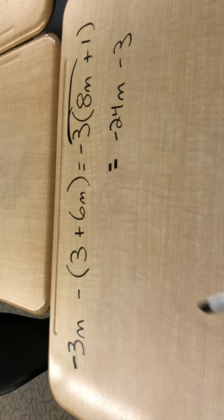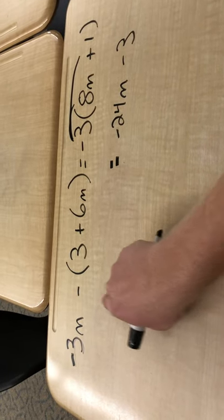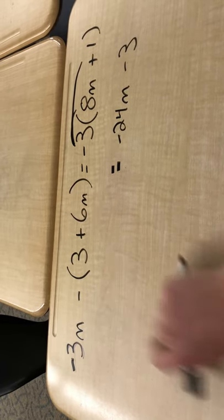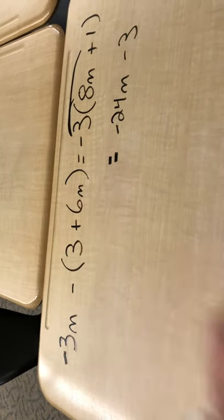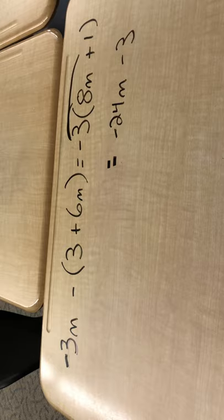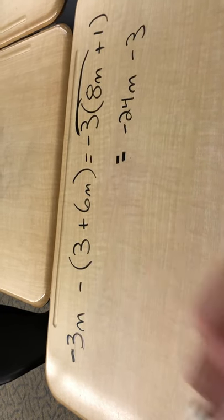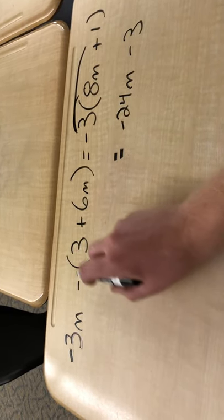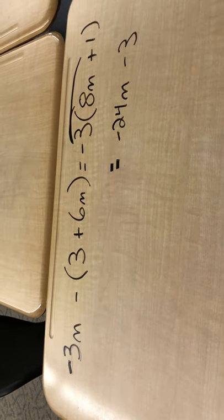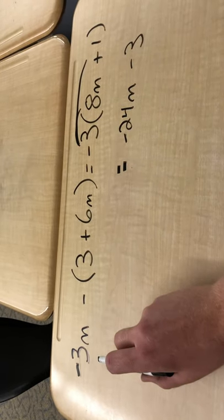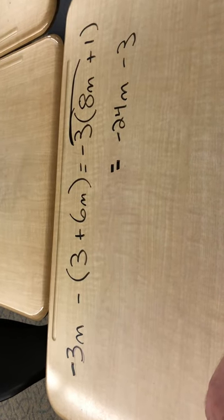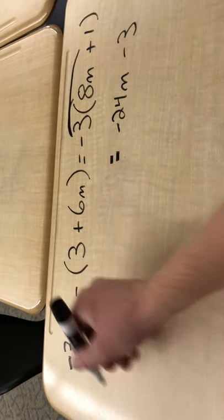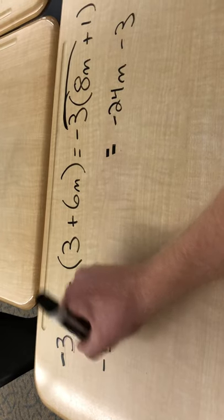Okay, this is what throws a lot of people. That minus sign right there, that is technically a negative 1. So we're going to distribute that negative sign right there. We're going to distribute that negative 1 to everything in that first parentheses. That negative 3m, that's a term right there that's all by itself. There's really nothing going on right there at all. So I'm going to drop that down. So negative 3m.